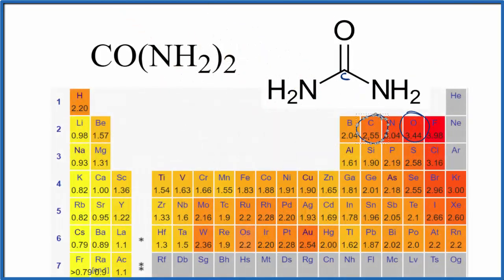So to recap, we have this fairly large difference in electronegativity between the carbon and the oxygen. That leads us to have a polar molecule for CO(NH2)2, urea.